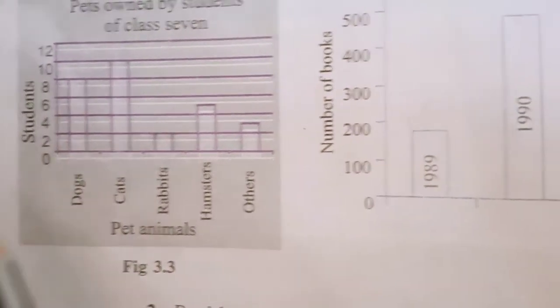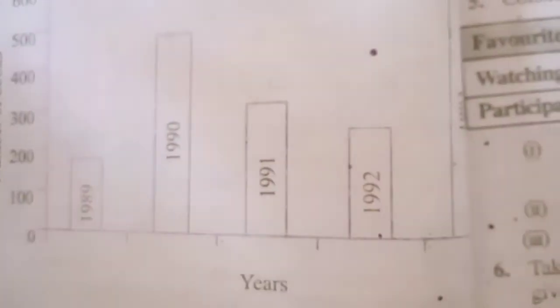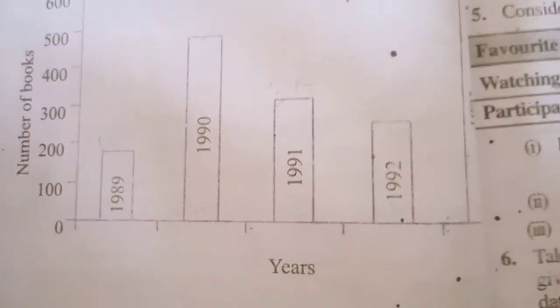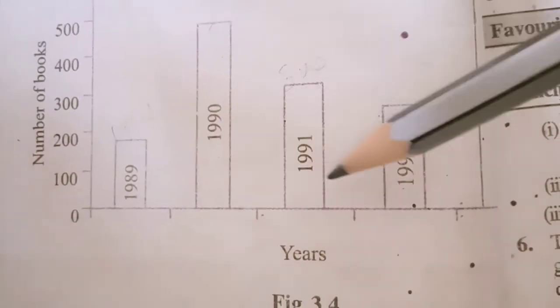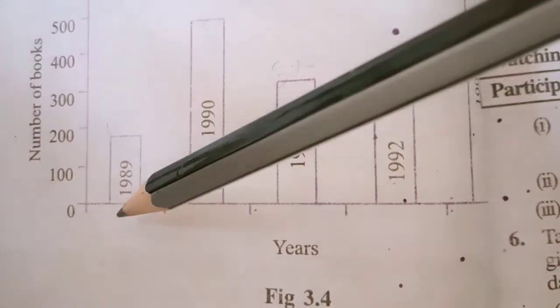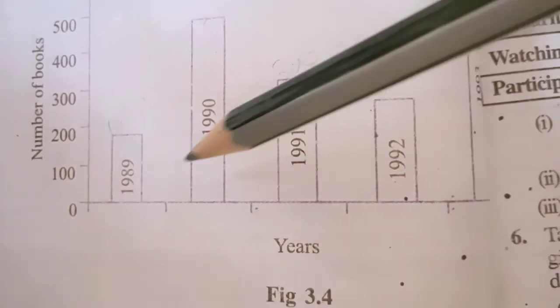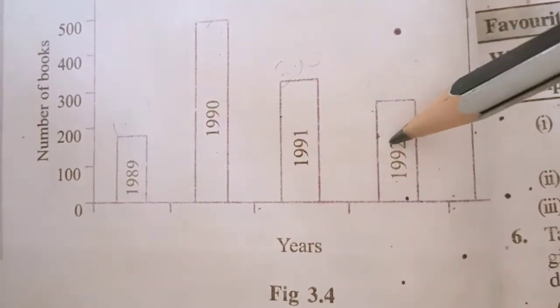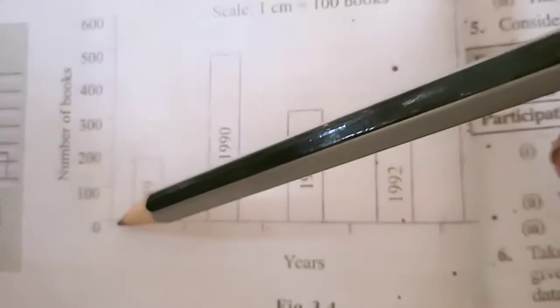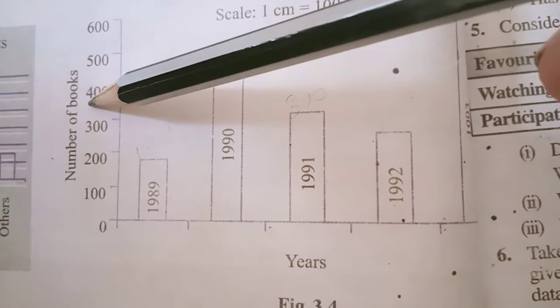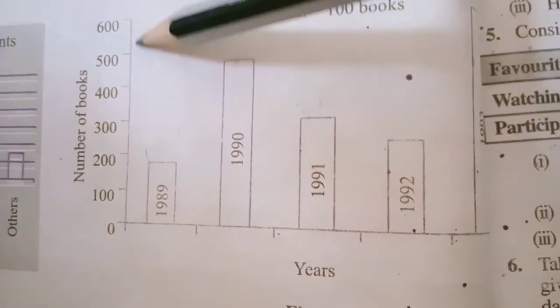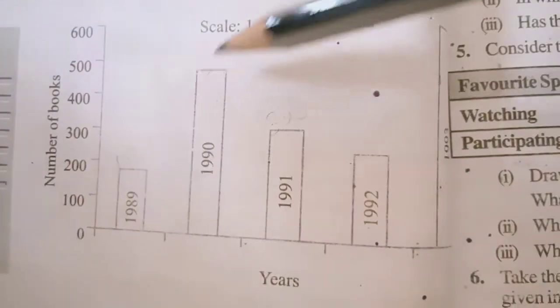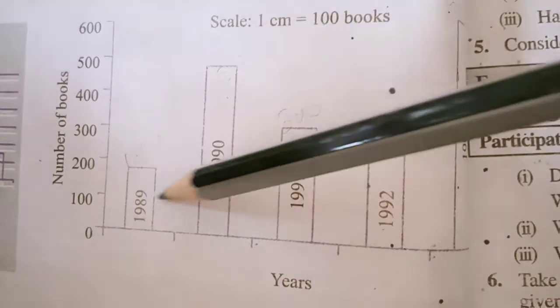Now see the second bar graph on same page. On the x-axis there are the years 1989, 1990, 1991, 1992. Instead of writing on the x-axis, it can be written on the actual bars also. This is one more method. On y-axis there are the number of books: 0, 100, 200, 300, 400, 500, and 600. This is the scale. Equal gap is of 100. Then scale is 1 cm equal to 100 books on y-axis.